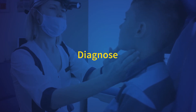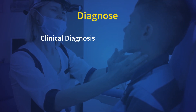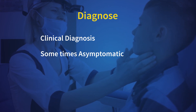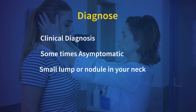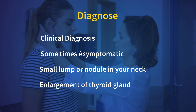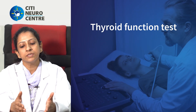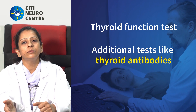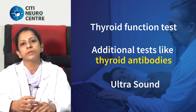How do you diagnose thyroid illnesses? First is a clinical diagnosis — when you go to your doctor, the doctor will examine your neck. Sometimes it is asymptomatic with no symptoms; sometimes you may have a small lump or nodule in your neck, or goiter which is enlargement of the thyroid gland. We then do blood investigations including thyroid function tests — TSH, T3, and T4 — along with thyroid antibodies and an ultrasound imaging to confirm the presence of nodules.